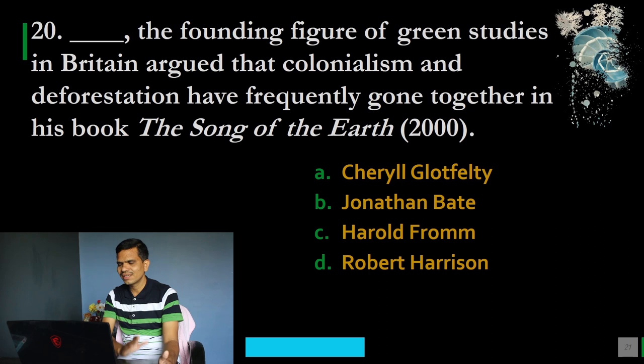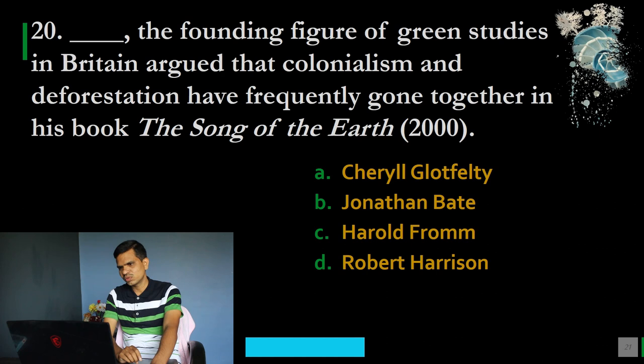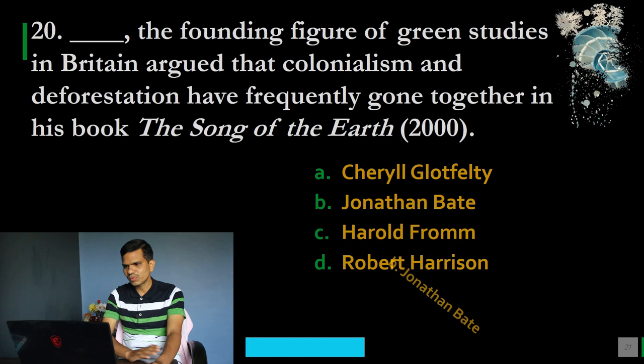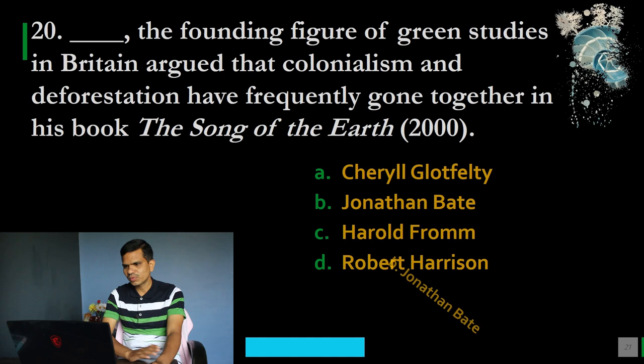Question number 20, our last question: The founding figure of green studies in Britain, who argued that colonialism and deforestation have frequently gone together in his book The Song of the Earth published in 2000, is whom? Options: A. Cheryl Glotfelty, B. Jonathan Bate, C. Harold Fromm, D. Robert Harrison. The correct option is B, Jonathan Bate. He is the founding figure of green studies in Britain, while in America we have Cheryl Glotfelty.